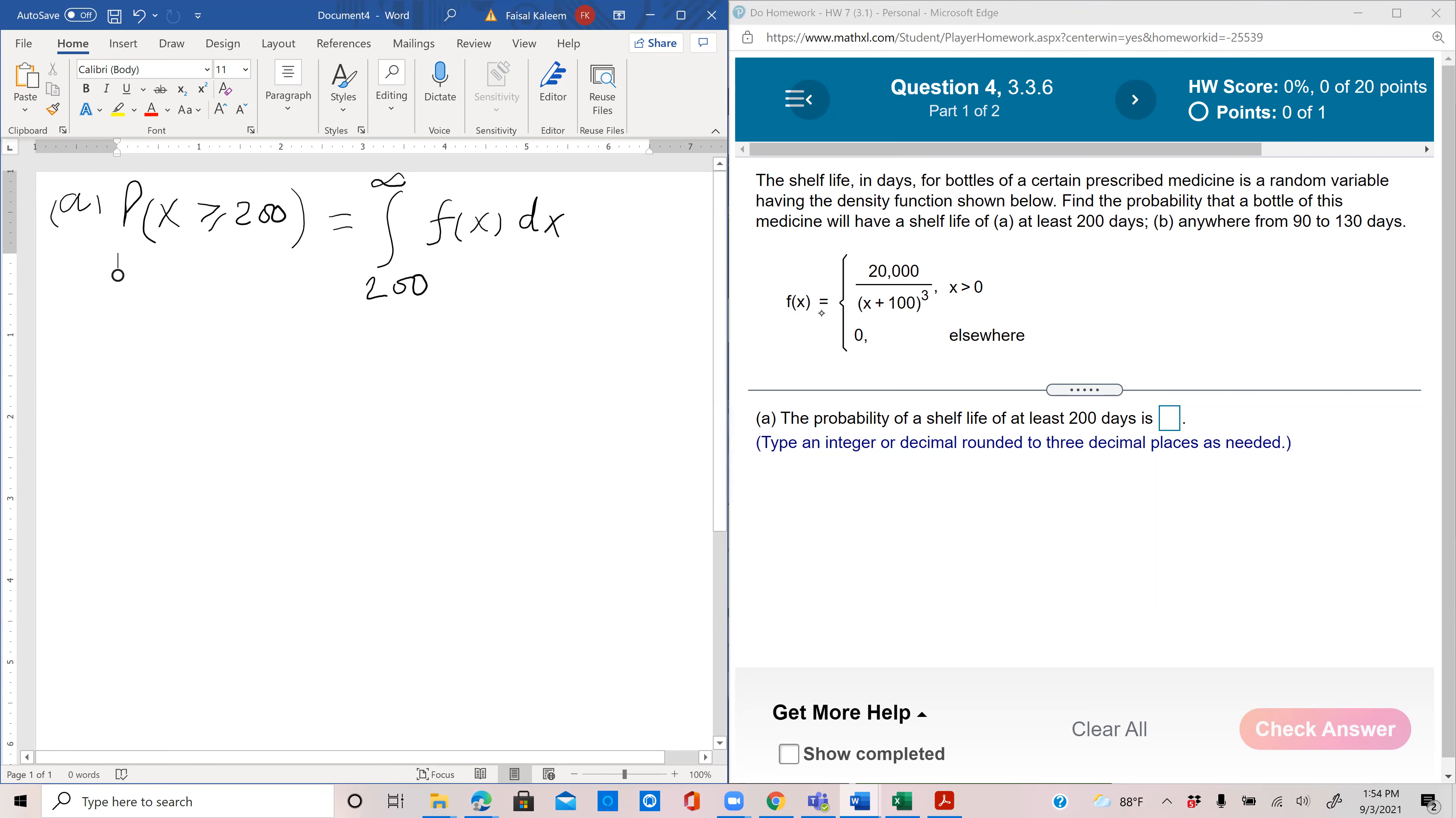This is equal to 200 to infinity, and now I replace f of x by 20,000 over x plus 100 cubed, because I need the definition of x that applies from x equals 200 up to infinity. That's the one that applies for all positive values of x, and between 200 and infinity all values are positive.